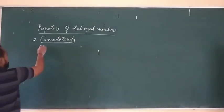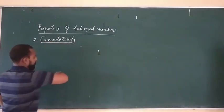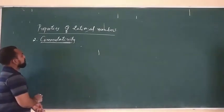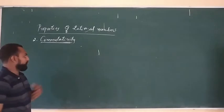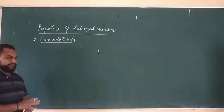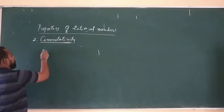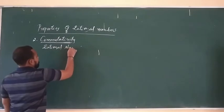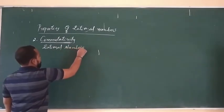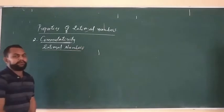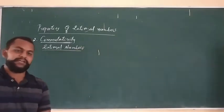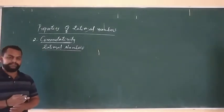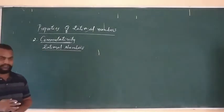The next one is the commutative property of the four operations for rational numbers. A rational number is a number which can be written in the form of p by q, where q is not equal to 0 and p and q are integers.